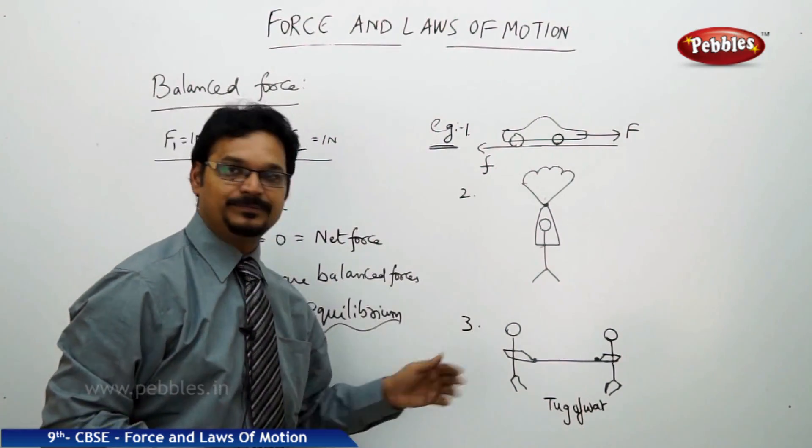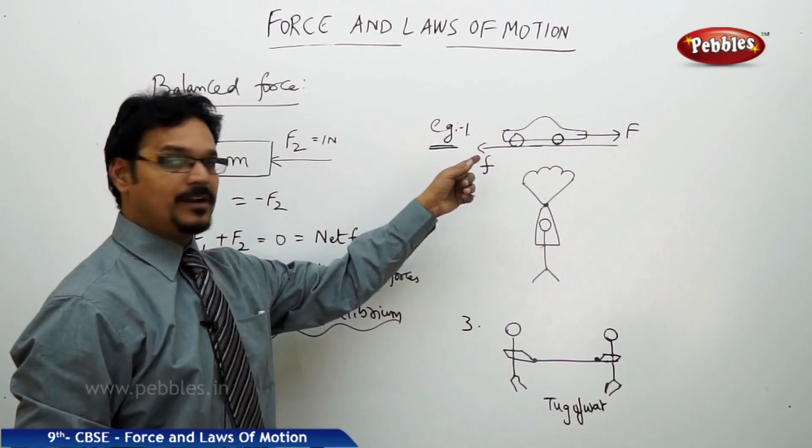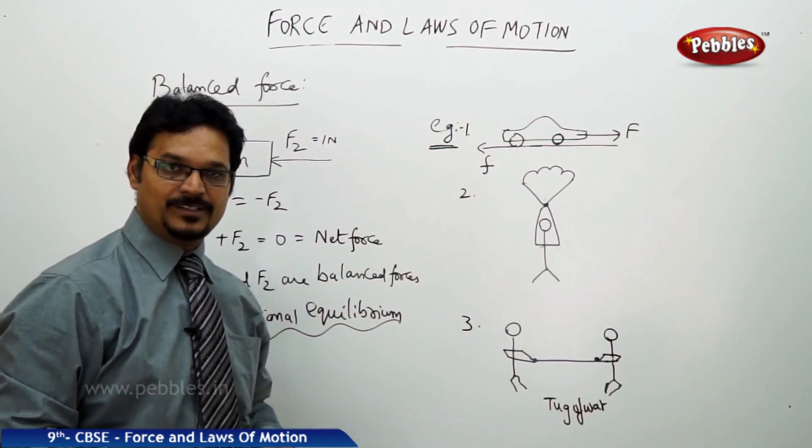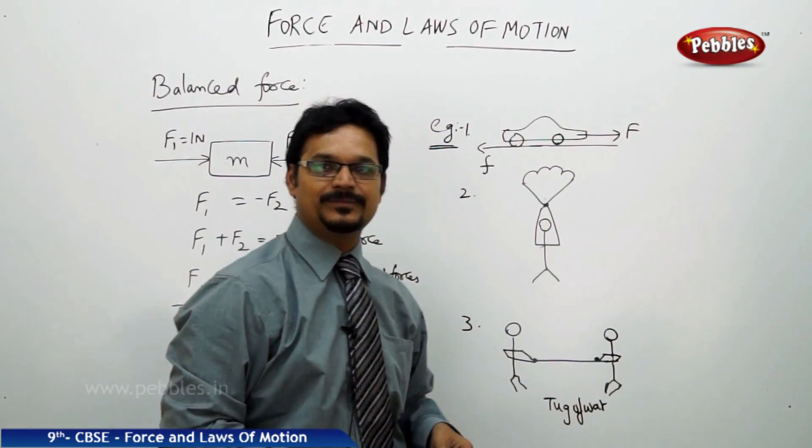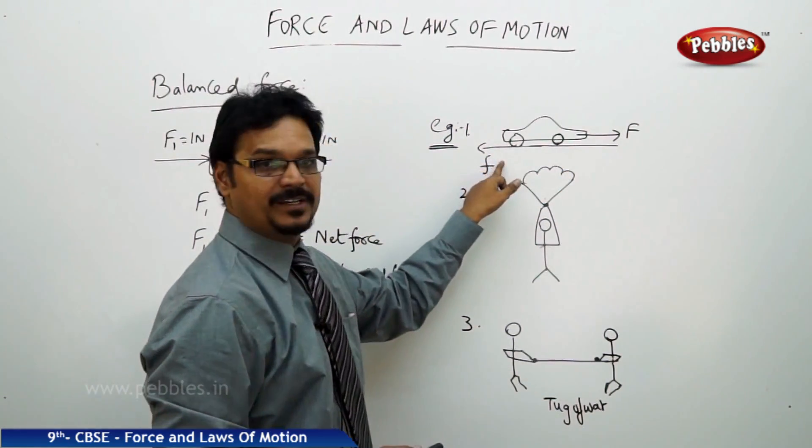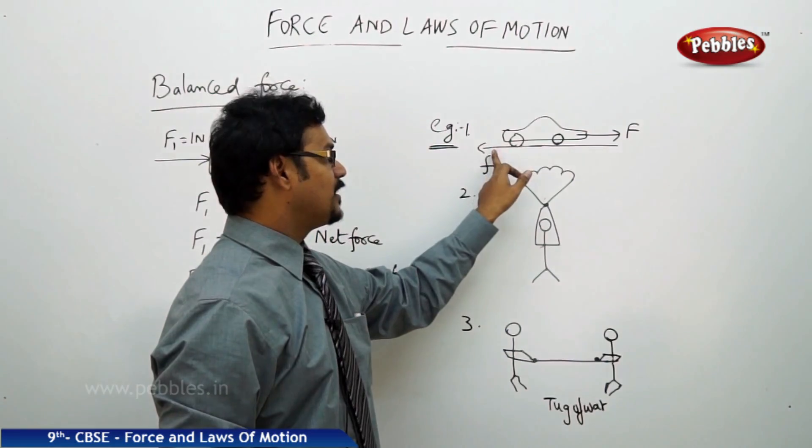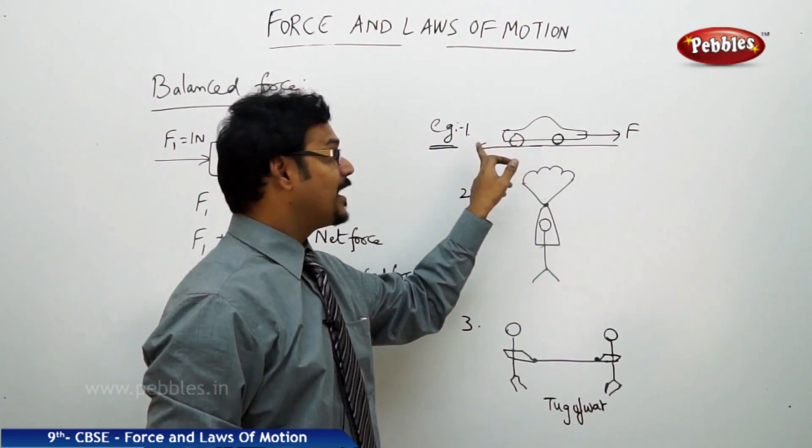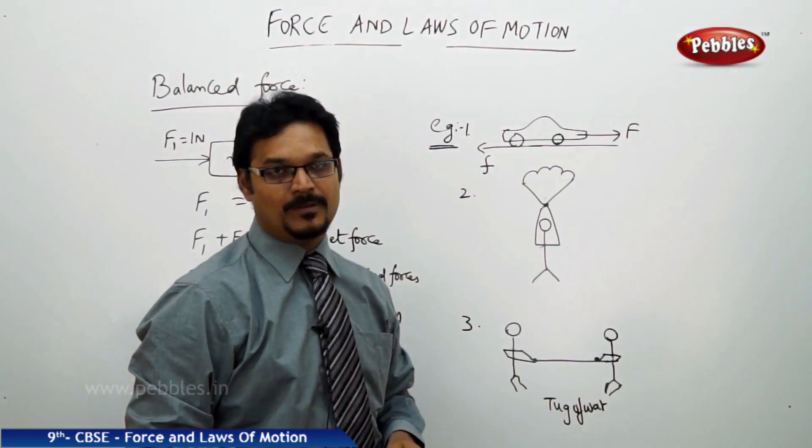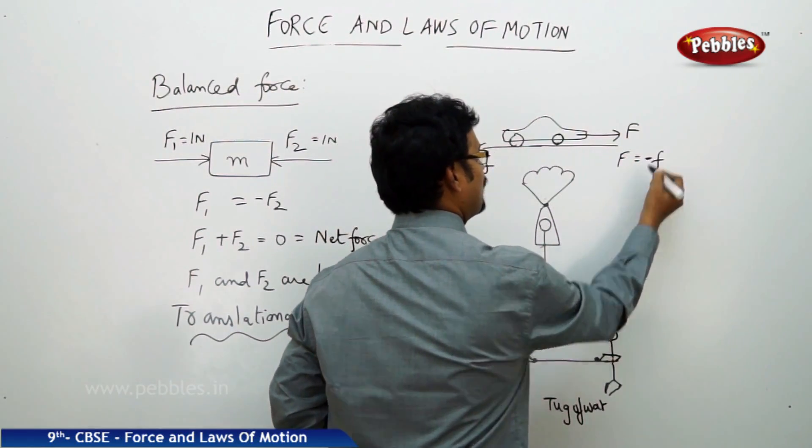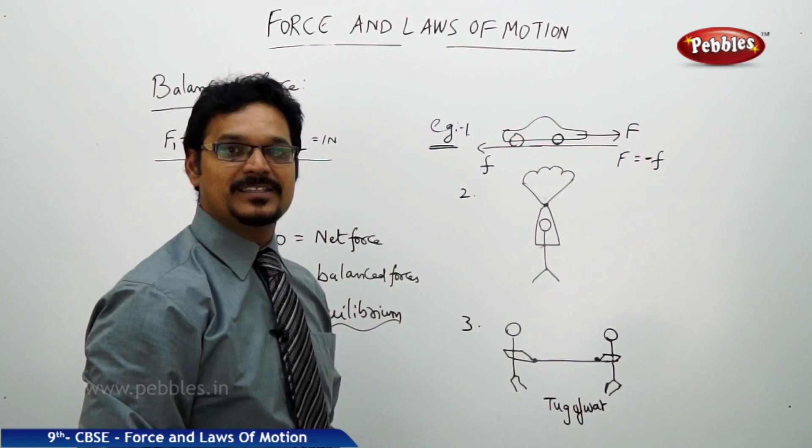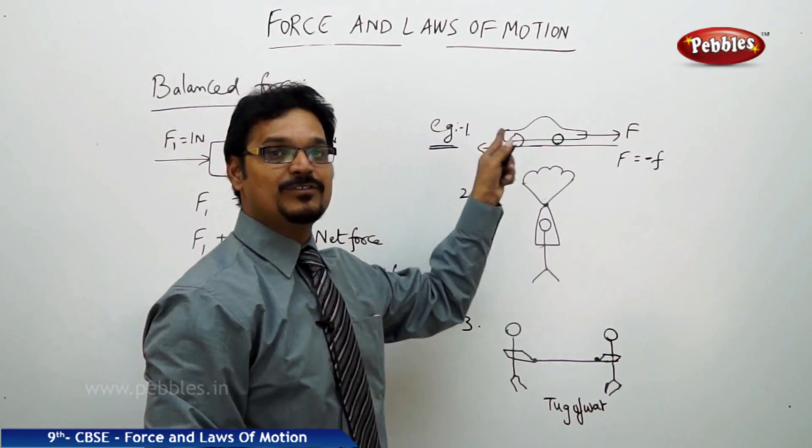So when the balanced forces are acting, net force is zero and the situation is translational equilibrium. Now see some practical examples. Here a car you move towards east, it is moving towards east because of engine force, capital F. But there is friction between the wheels of the car, between the tires of the car and the road. Whenever F capital equals minus small f, then we can say the car is in uniform motion.